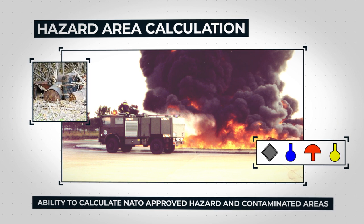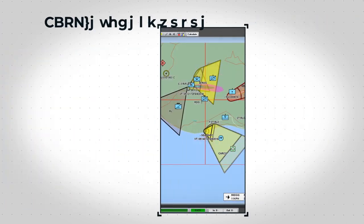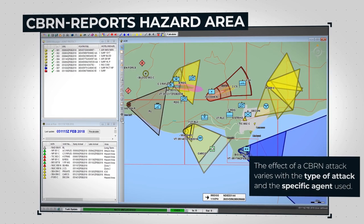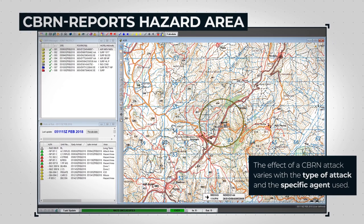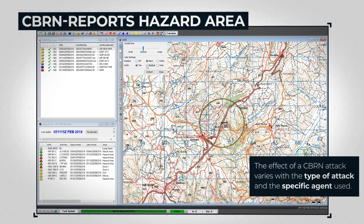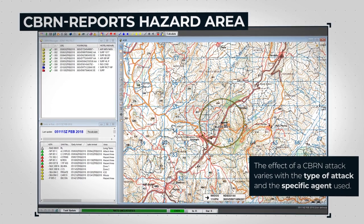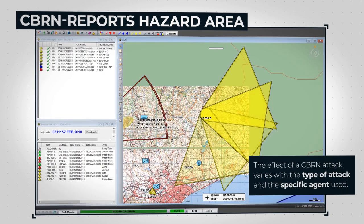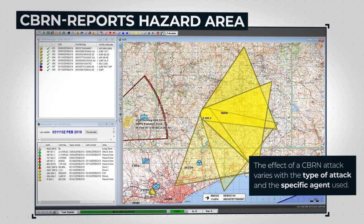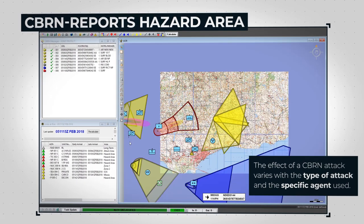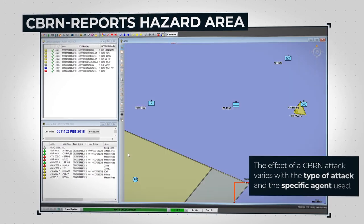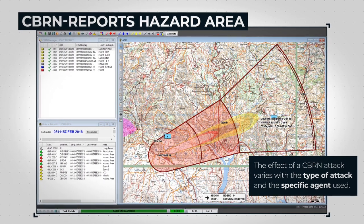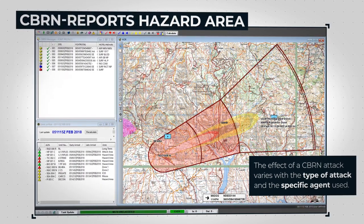Including toxic industrial materials, the effect of a CBRN attack varies with the type of attack and the specific agent used — from blood agents that produce an immediate effect but dissipate within a few minutes, to persistent agents that remain present at the attack location for days or even months, creating a variable hazard as the weather conditions vary from hour to hour. The complexities of biological agents and radiological or nuclear hazards are also included.